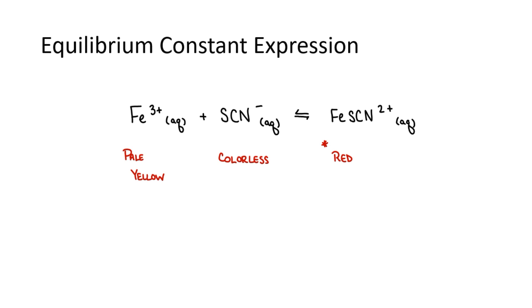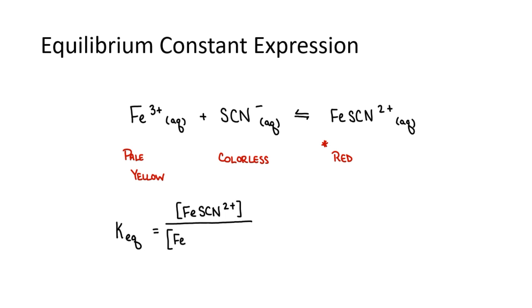Before we start, let's write the equilibrium constant expression for this reaction. We have the aqueous solution of FeSCN²⁺ as our numerator. The concentration of the iron 3-ion will be multiplied by the concentration of the thiocyanate ion in our denominator.